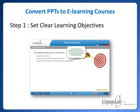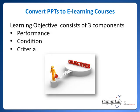Set clear learning objectives. Adding learning objectives to the course enables employees to know how the learning activity would help them in their job performance. Learning objectives describe what employees are supposed to know and do after completing the course. According to Robert Mager, an ideal learning objective consists of three components: performance, condition, and criteria.